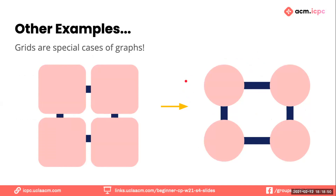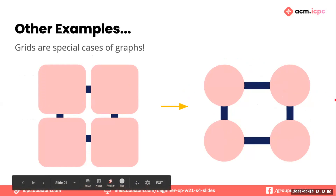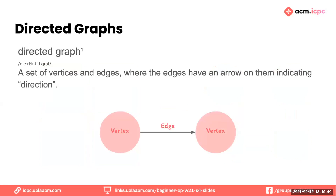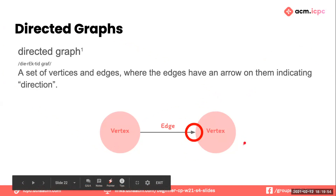Grids are a special case of graphs, which is why you might see grids in graph problems. You can turn a grid into a graph, and the same algorithms we'll use today apply to grid problems as well. When modeling real-world problems, you might notice that not all relationships are two-sided. For example, on Valentine's Day: what if you have a crush on somebody but they've made it clear they don't have a crush on you? A directed graph is a set of vertices and edges where the edges have arrows indicating direction — this vertex has a relationship to that one, but not vice versa.